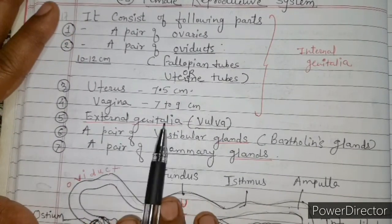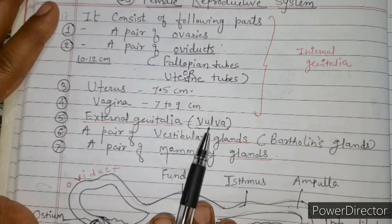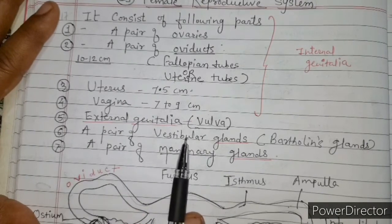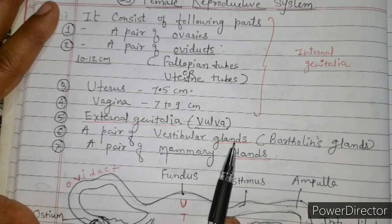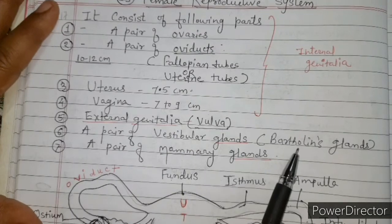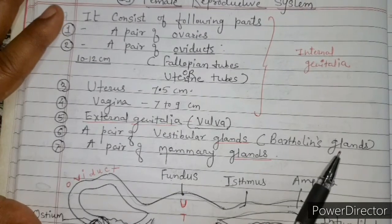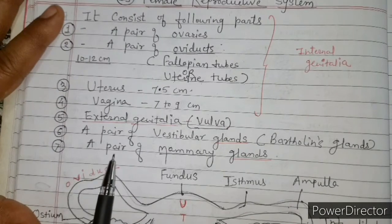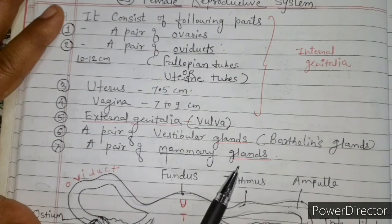External genitalia is also called the vulva. The sixth part is a pair of vestibular glands, also called Bartholin's glands, and the seventh is a pair of mammary glands.